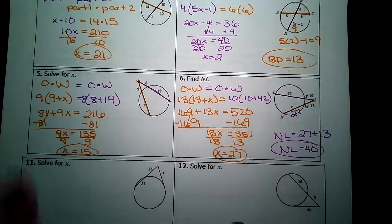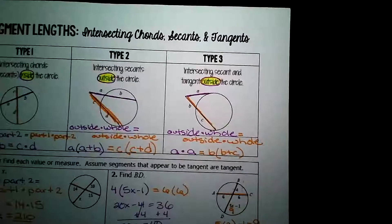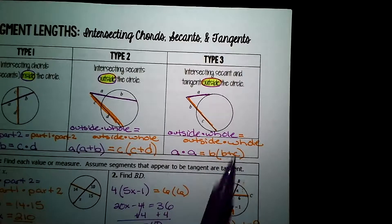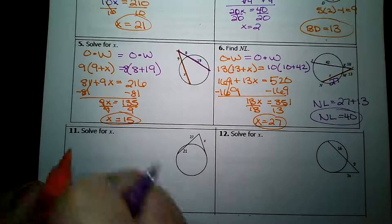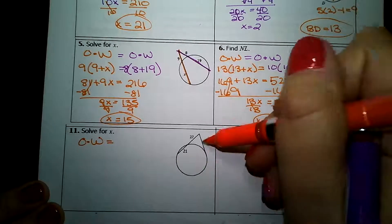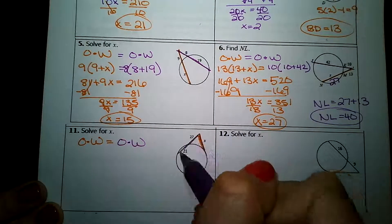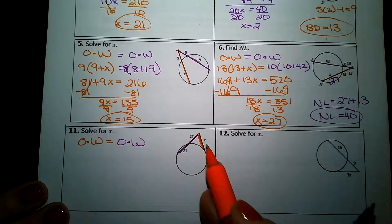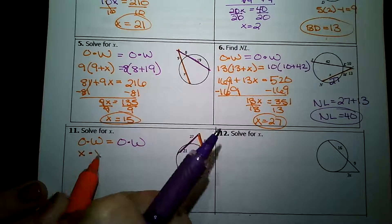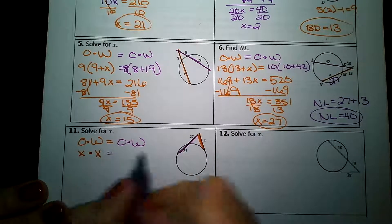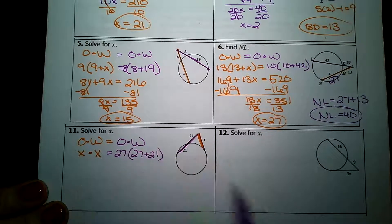We have two more examples on this page. And these two final examples are a secant and tangent combo. So it's type 3 up here in our notes. We're still going to use this outside times whole pattern. Let's do an example here. I've got outside times whole of one cord equals outside times whole of another cord. I've highlighted this x secant orange. It is the outside value and the whole value. On the purple secant, the outside value is 27. The whole length is 27 plus 21.